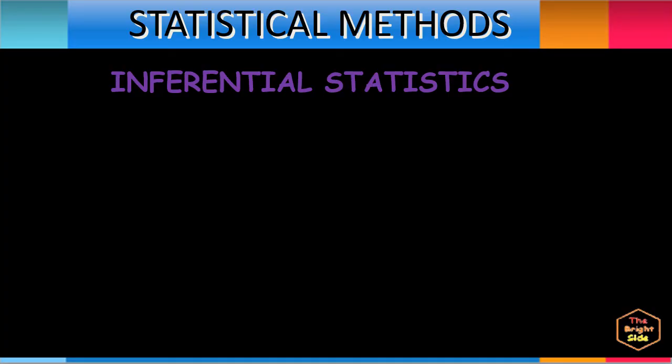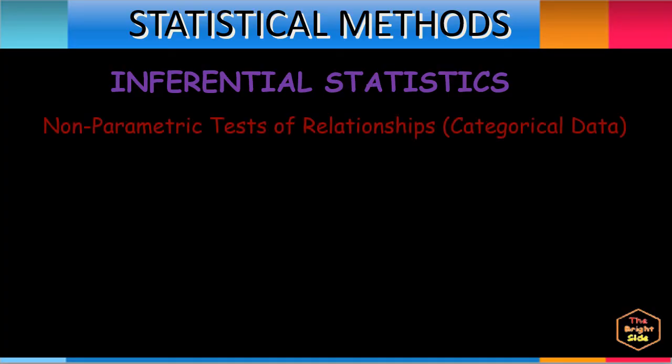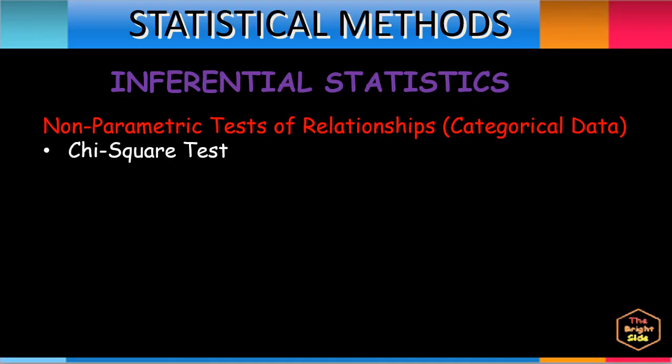Under inferential statistical methods, we have non-parametric tests of relationships for categorical data: the chi-square test of independence. This is a non-parametric test that assesses whether an association exists between two variables, testing to see if they are related or differ from each other.